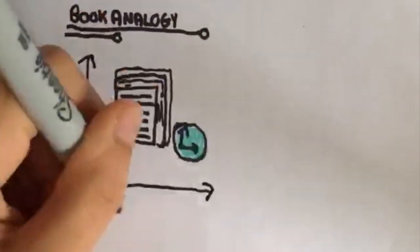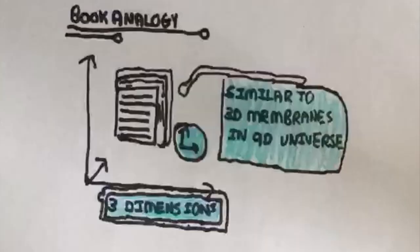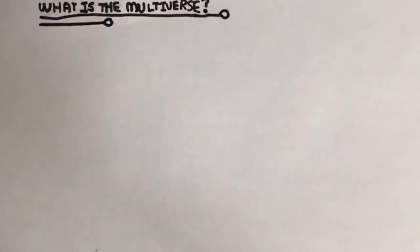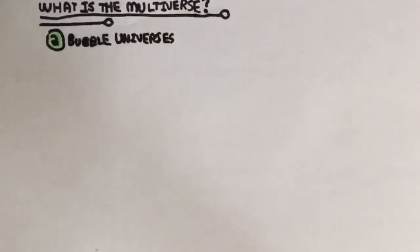This is somewhat like the pages of a book, which are two-dimensional membranes being embedded in this three-dimensional world. Bubble universes are the secondary types of parallel universes, and are the most basic and least complex theory out there about the topic.